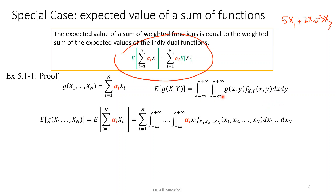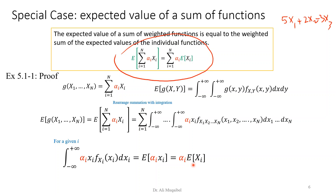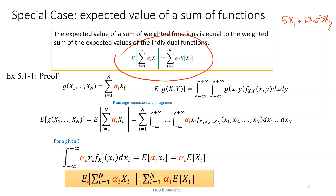If we substitute specifically for our example, we take the expectation inside and can say the expected value of g(x) is the expected value of the sum of weighted functions. For any one element in the summation, you can marginalize the other variables and get the weighted expected value of x_i. Applying the summation gives the original formula. The expected value of a sum of weighted functions equals the weighted sum of the individual expected values.